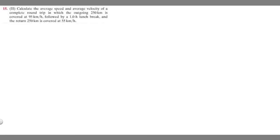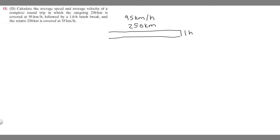Let's go ahead and draw what's going on. We have this round trip, and we go out 250 kilometers, covered at 95 kilometers per hour, and then we take a one-hour lunch break. I'm going to draw a little line and label it one-hour lunch break, and then we're going to travel back 250 kilometers, covered at 55 kilometers per hour.